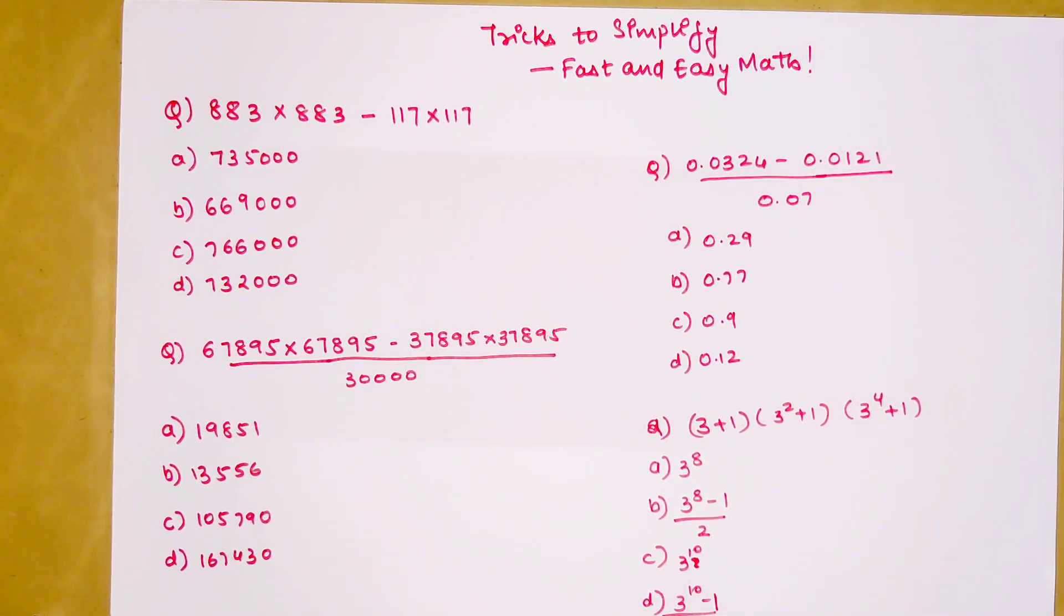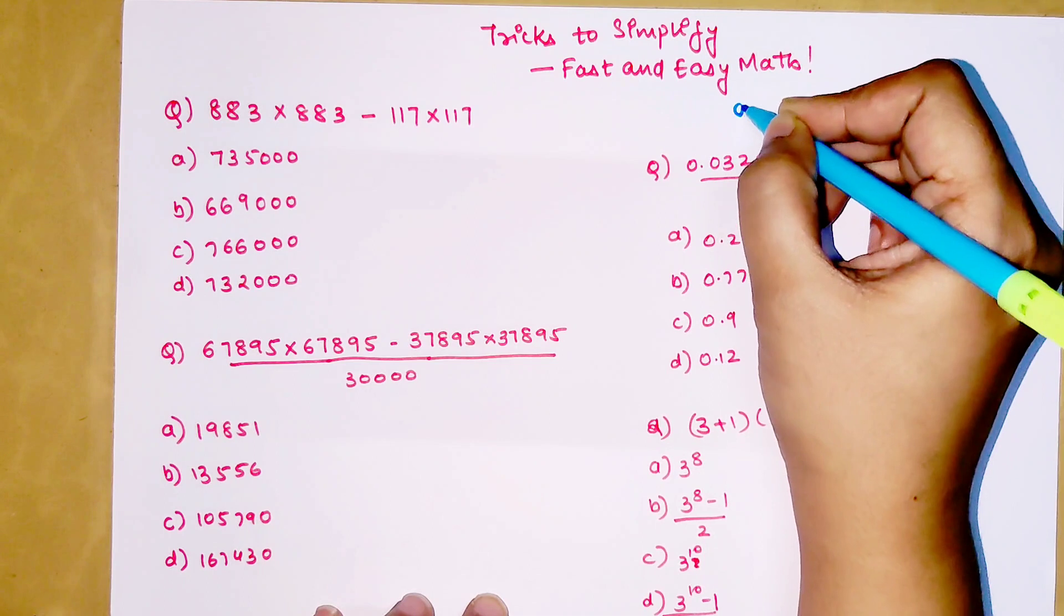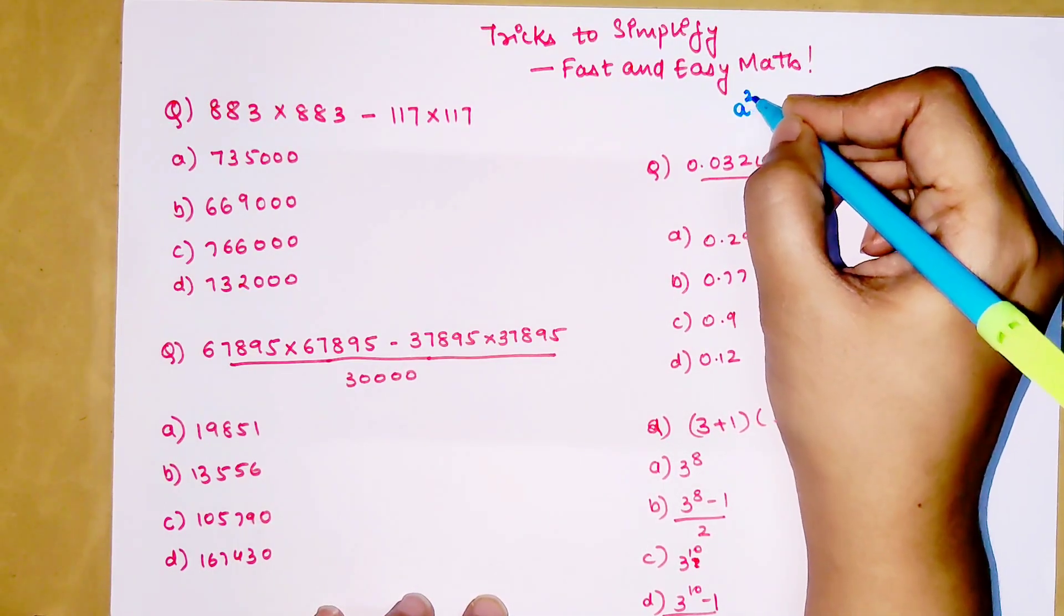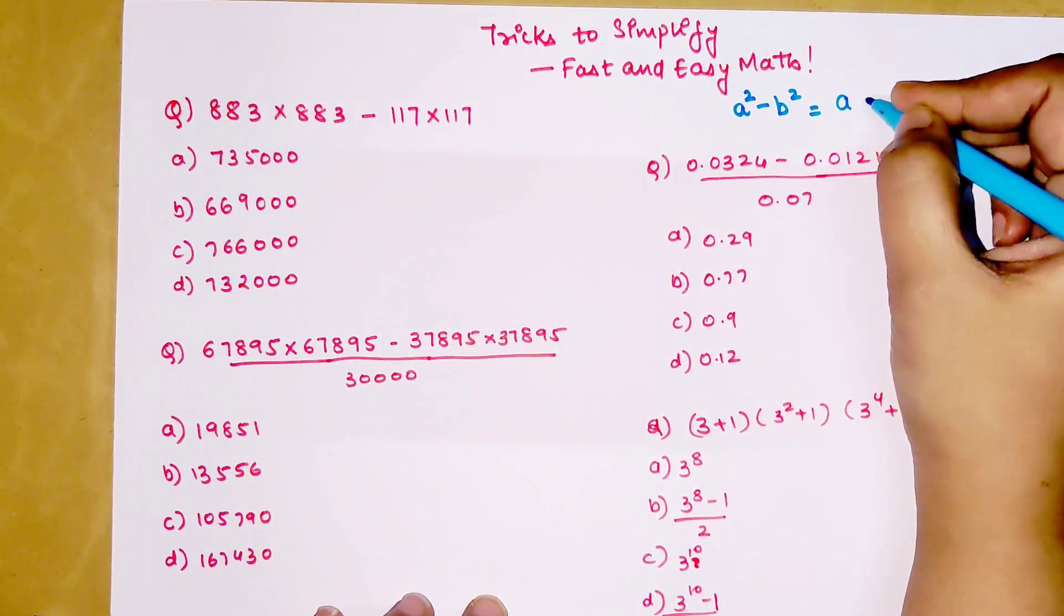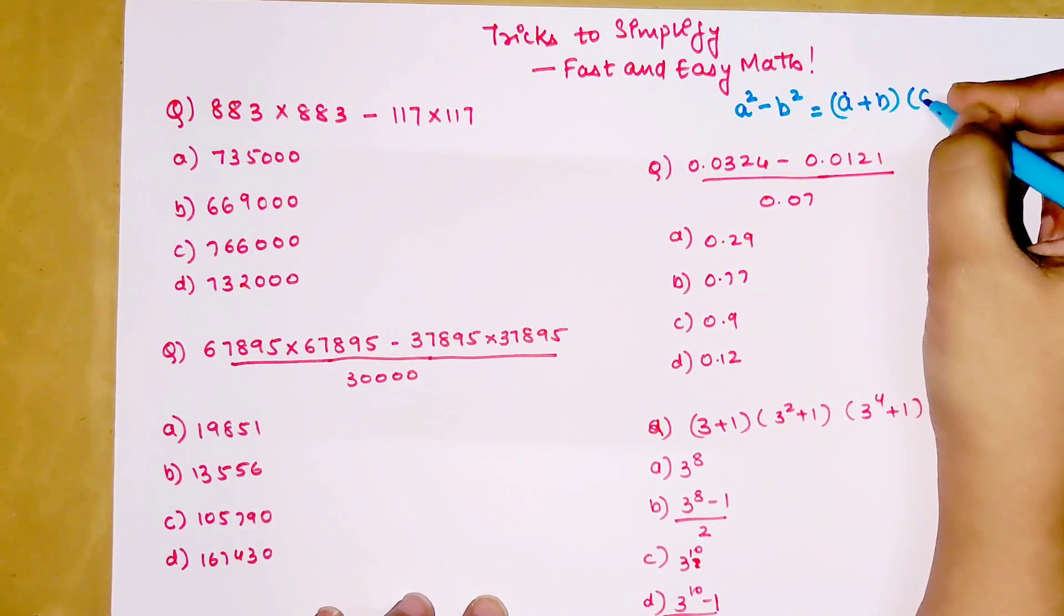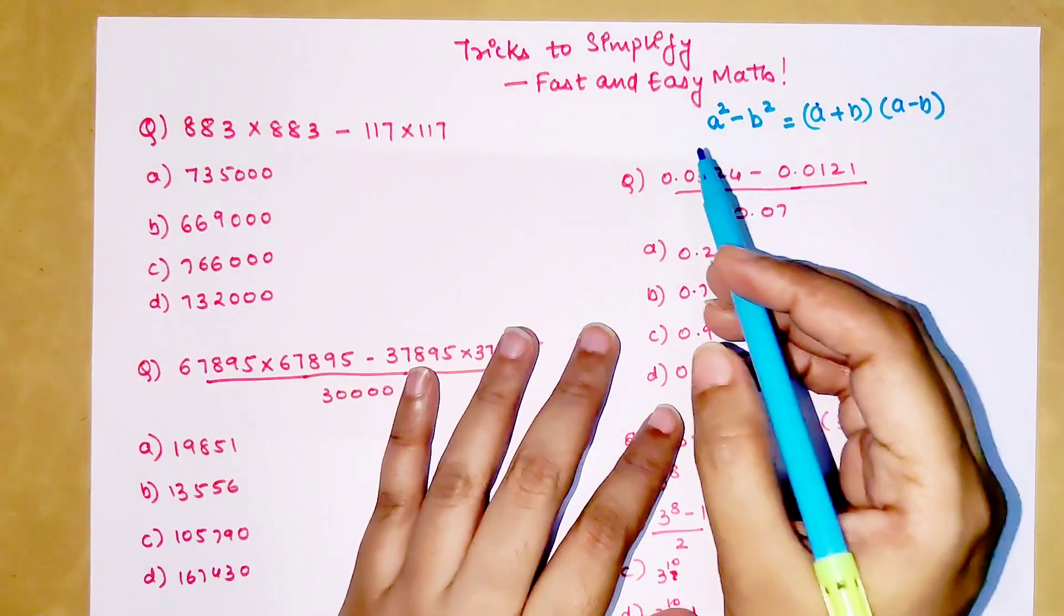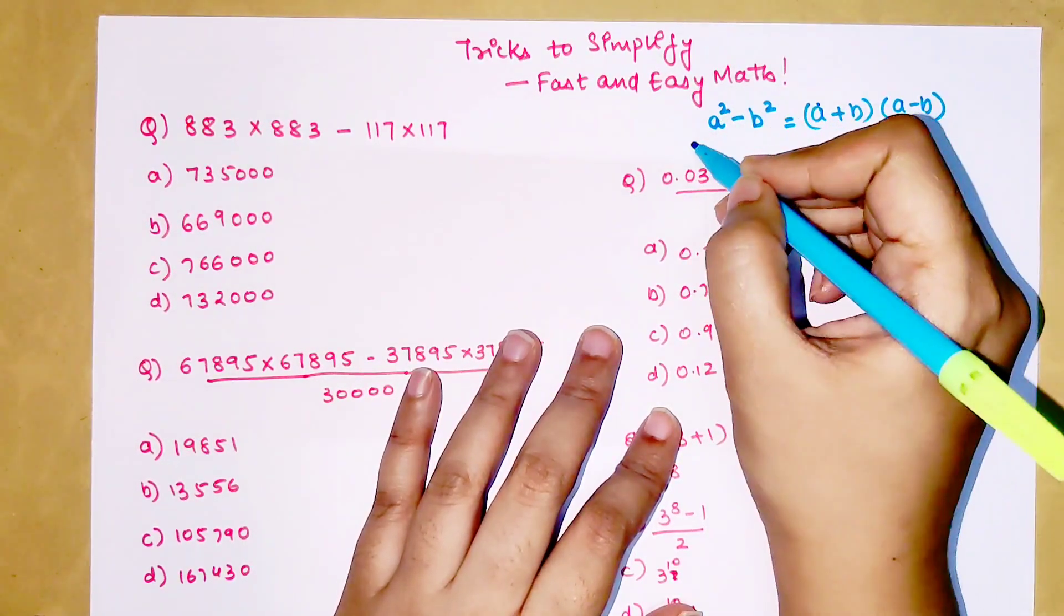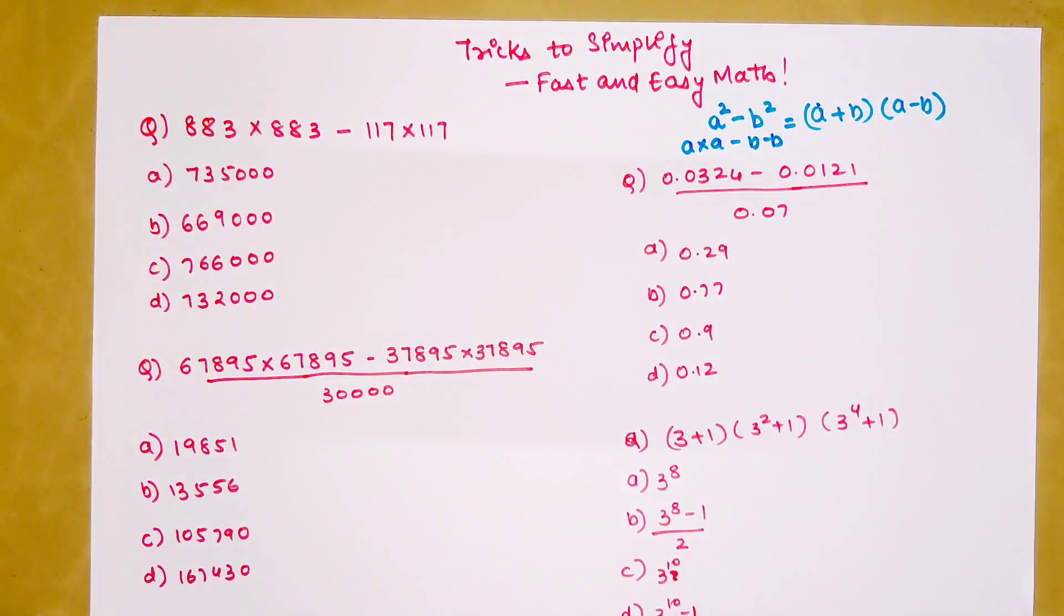You don't have to even think much. You just have to focus on only one formula. Whenever you have a² - b², that can be expanded into (a + b) and (a - b). So a² - b² can be written as a into a minus b into b.